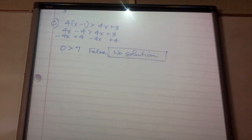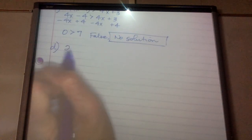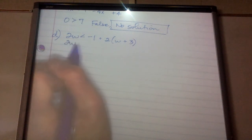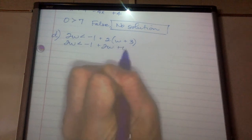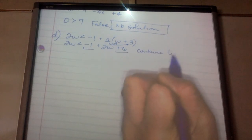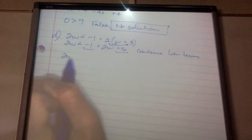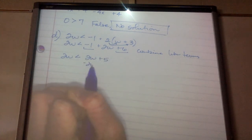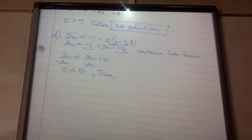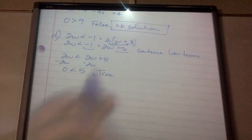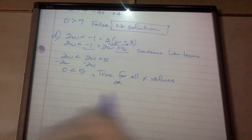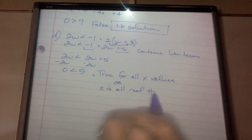Part D says to solve 2W is less than negative 1 plus 2 parentheses W plus 3. I'm going to distribute first: 2 times W is 2W, 2 times 3 is 6, then combine terms. So 2W is less than 2W plus 5. Subtract 2W and I get 0 is less than 5. In this case, this is true — so you could write all real numbers, infinite solutions, or that it's true for all values.